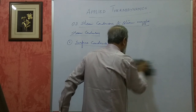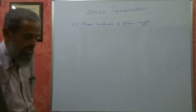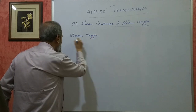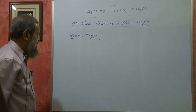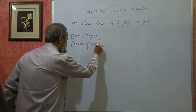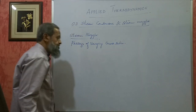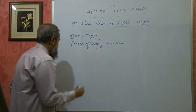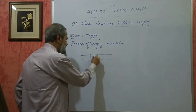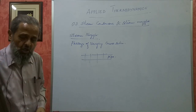You do not get numericals from condensers, but you get numericals in nozzles. Next, we will take up steam nozzles. A steam nozzle is defined as a passage of varying cross section - varying cross section means its area keeps on changing from one place to another. If it is a passage of uniform section with the same area everywhere, then you call that a pipe.